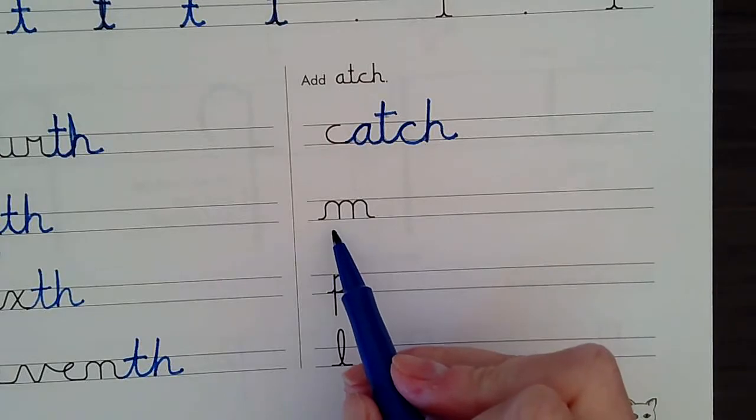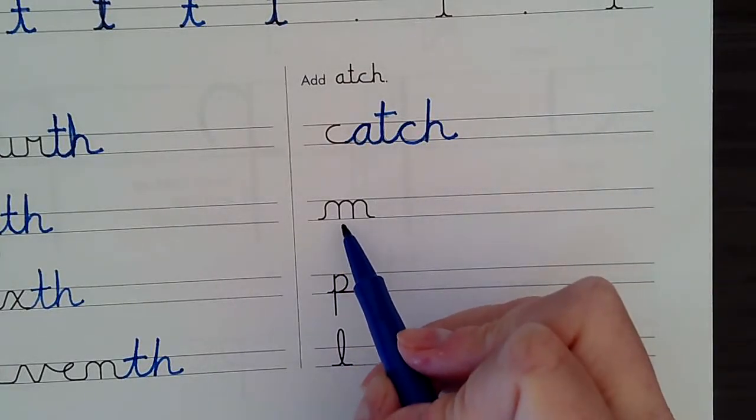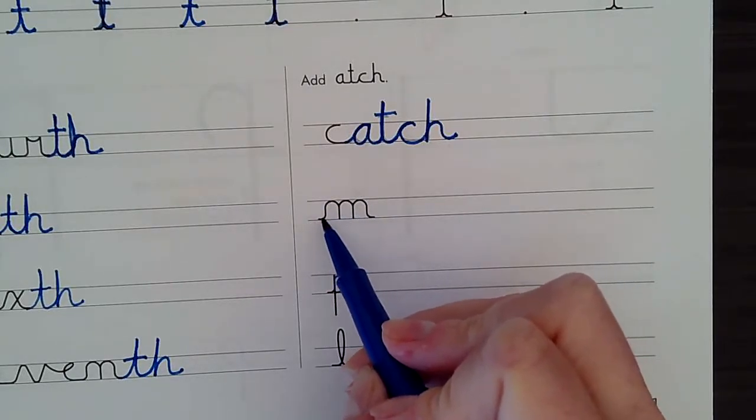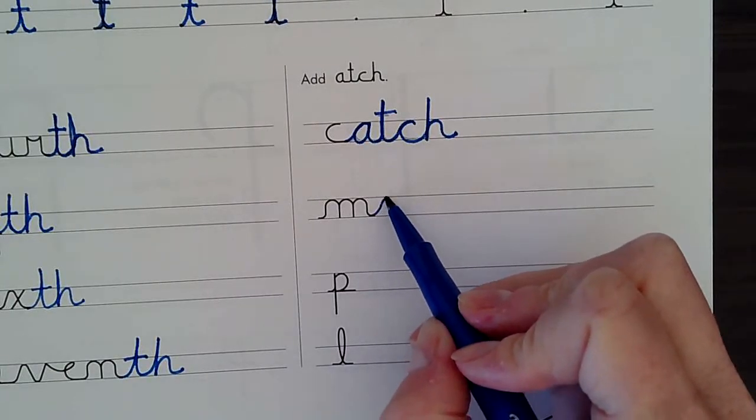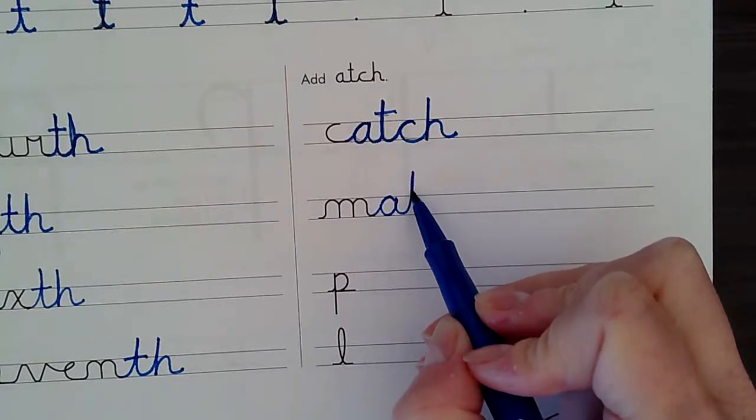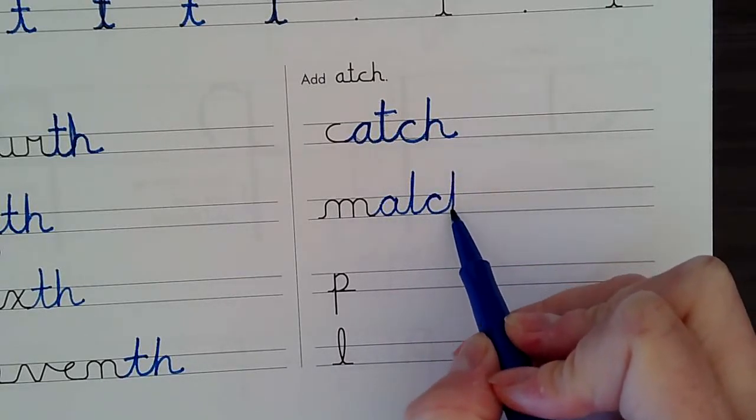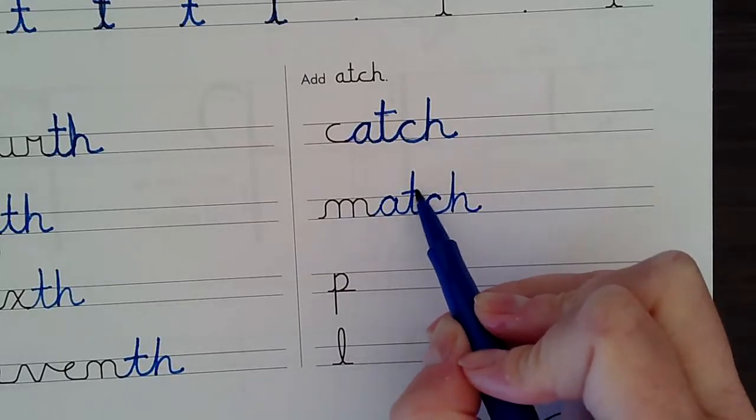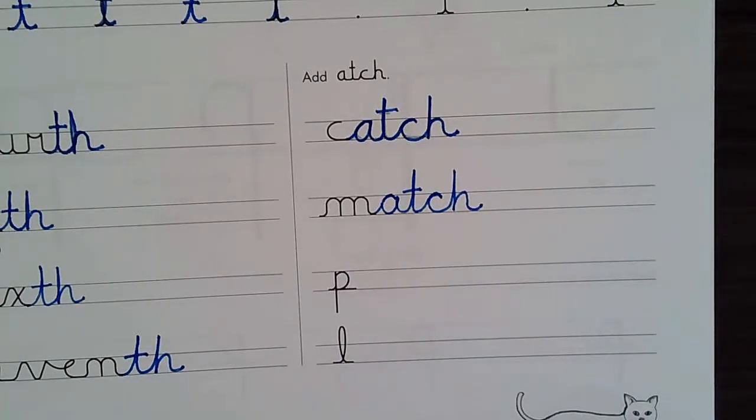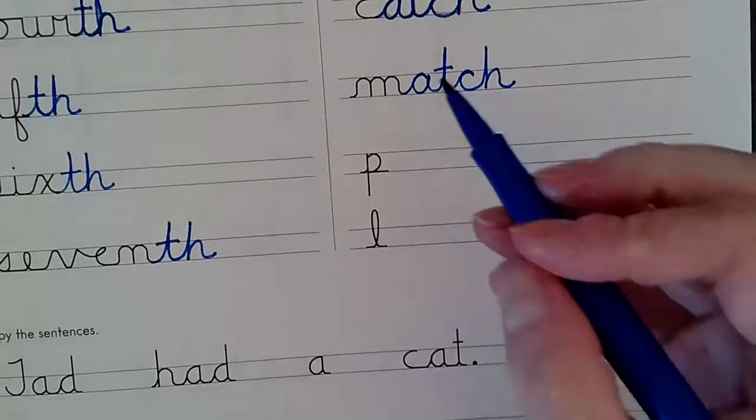Now this is a letter M. Look at that funny M. It almost looks like it has three humps, doesn't it? Because they started with this little curvy tail here. But I'm going to add my A, T, C, and then H. And then I cross my T. And that word says match. Match. Like I need to pick out two socks that match each other.